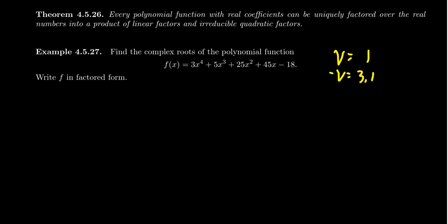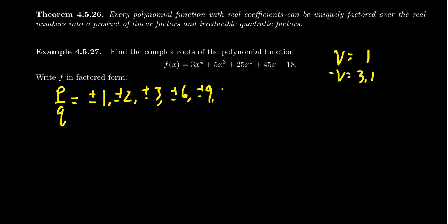We could look for the one positive root or try to look for the negatives — whichever you prefer. In terms of the rational roots theorem, the potential rational roots are going to be factors of 18 divided by factors of 3. So that's ±1, ±2, ±3, ±6, ±9, ±18. Those are the factors of 18, and then we also divide those by 3, giving us ±1/3 and ±2/3. That's our list.